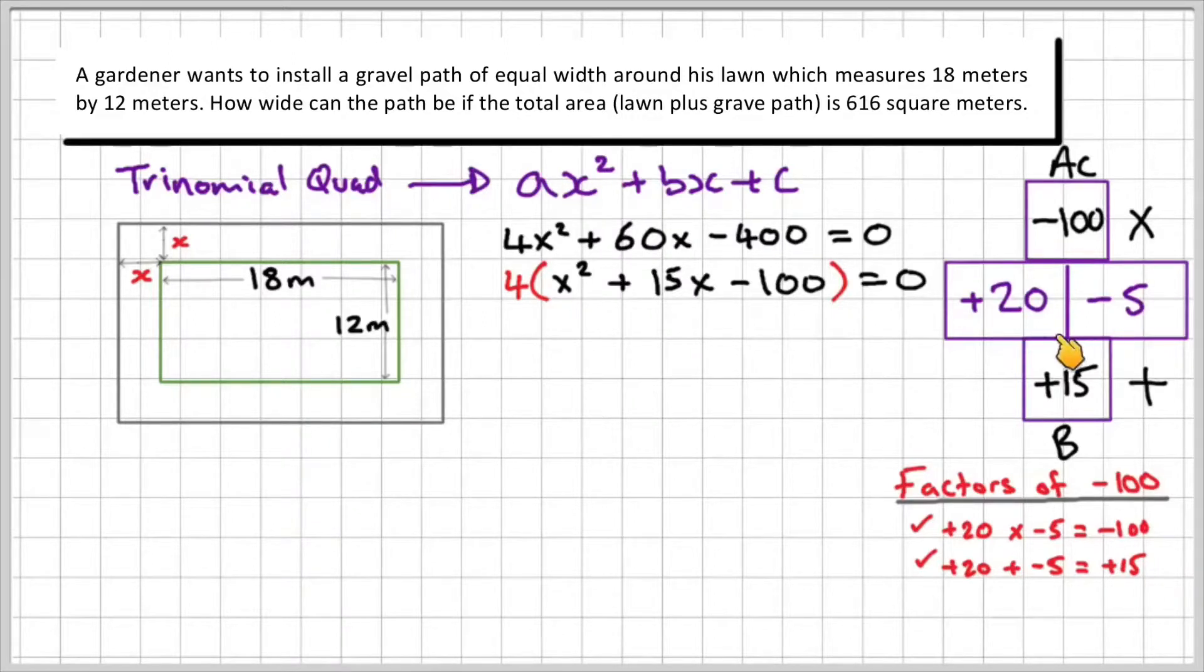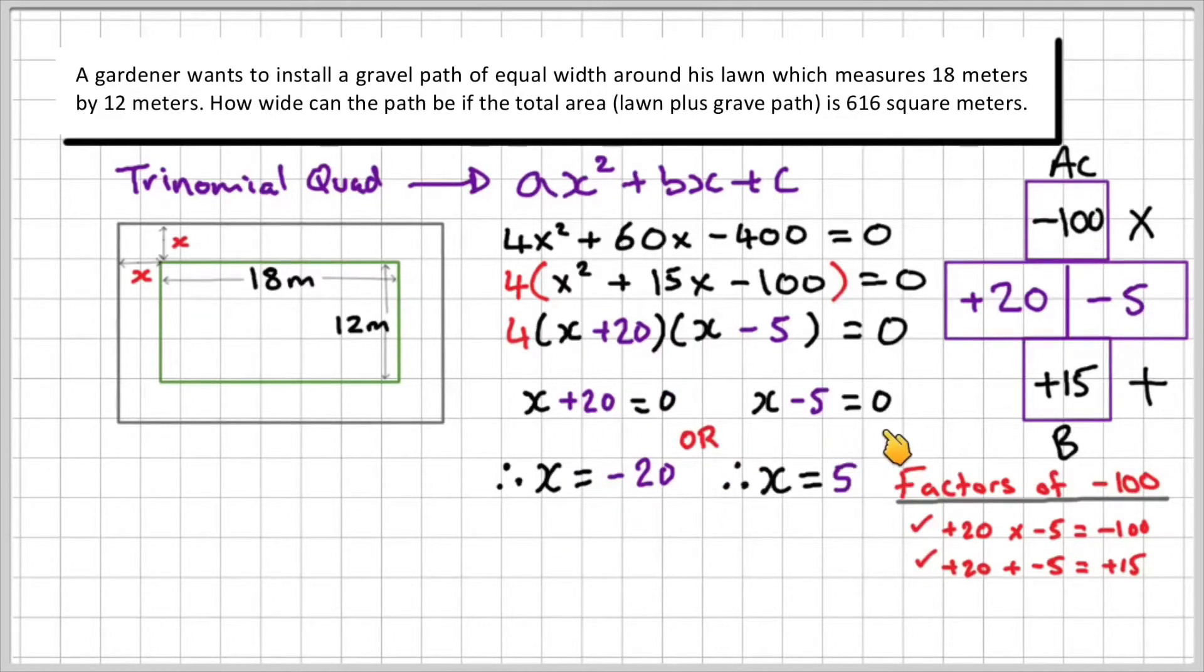So I'm going to use these two to factorize my quadratic, which gives me a common factor of 4, X plus 20, and then X minus 5 equal to 0, which means X plus 20 equals 0, therefore X is minus 20, or X minus 5 equals 0, which means X is equal to 5.